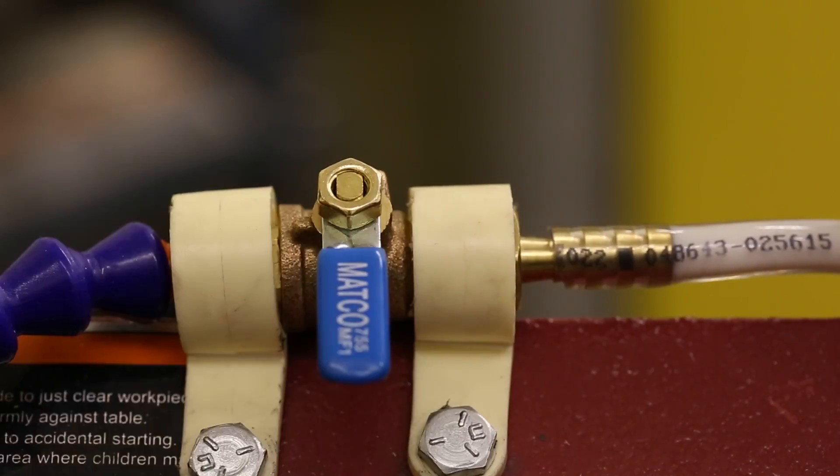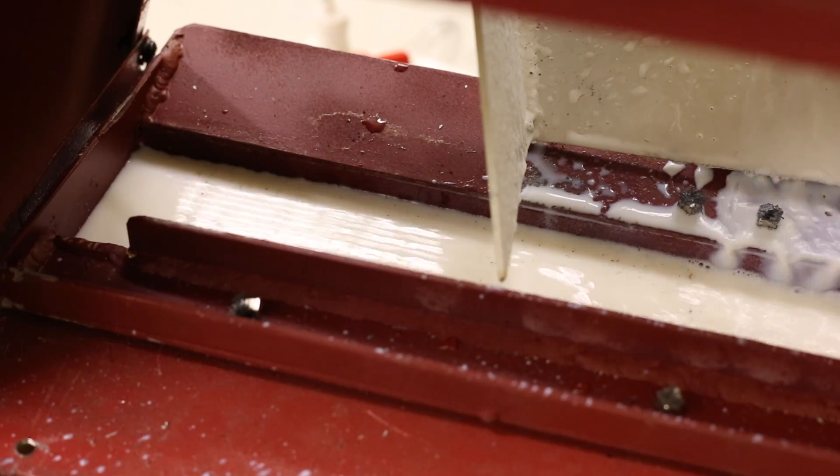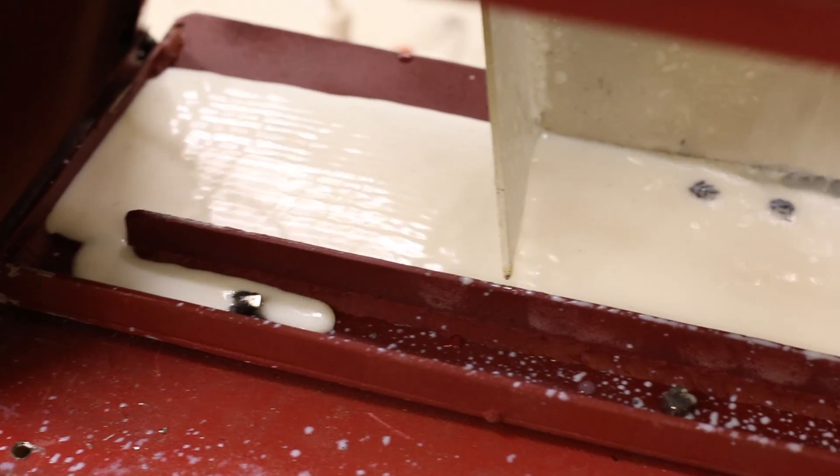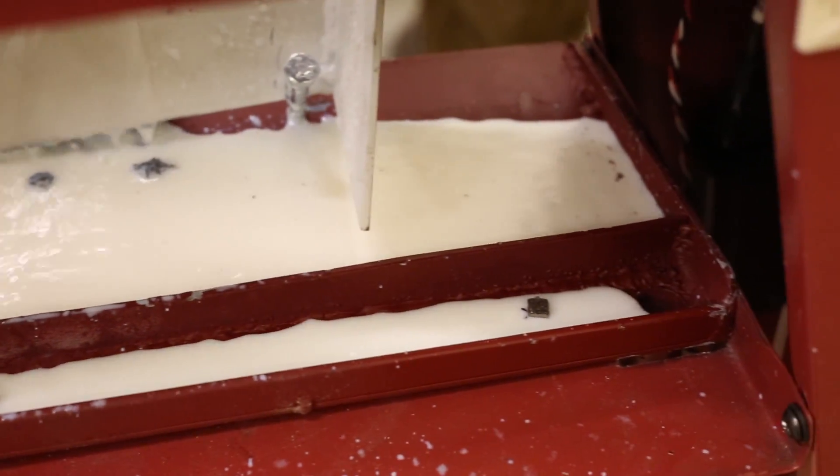When metal is cut on the saw, the shavings are washed into the coolant tray. Several magnets help to collect the ferrous materials. When the tray fills to the top, it overflows and washes down to a return hose, bringing it back into the coolant bucket.